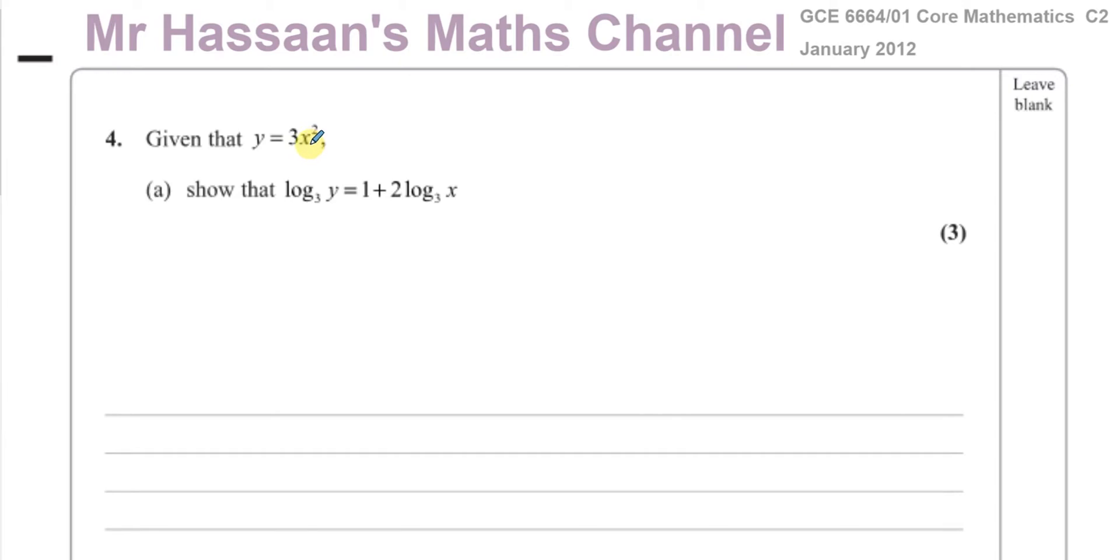Given that y equals 3x squared, show that the log to the base 3 of y equals 1 plus 2 log to the base 3 of x. So basically this question you have to start off with your y equals 3x squared, and because they've told you what you have to show, you have to be very careful to show your steps properly.